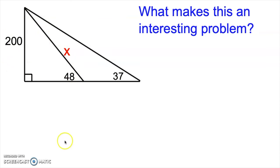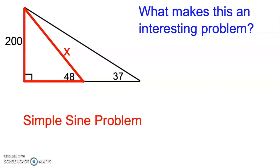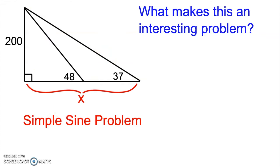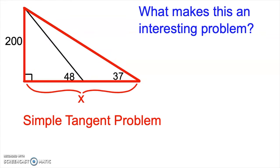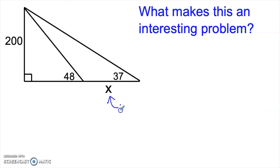What if we move the x here? Now this is a side in the non-right triangle, so it might make this an interesting problem, but it's also the hypotenuse of the little right triangle. So we don't need to make it interesting — we can just do a simple sine, opposite over hypotenuse, in this little red triangle. Even if I put the x down here, that's just a side of the large right triangle, and we can do a simple tangent and solve using the large right triangle.